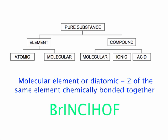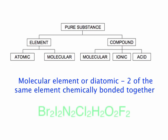Bromine, Iodine, Nitrogen, Chlorine, Hydrogen, Oxygen, Fluorine. These are all the seven diatomics that occur naturally in nature.